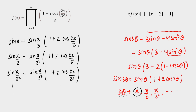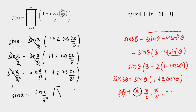If we multiply all these equations from left-hand side and right-hand side, sin(x/3), sin(x/3²) and so on will cancel out telescopically. On the left-hand side, sin(x) remains. On the right-hand side, we have the product of all (1 + 2cos(2x/3^n)) terms, plus sin(x/3^n) remaining at the end. So sin(x) equals sin(x/3^n) multiplied by the product from n=1 to n of (1 + 2cos(2x/3^n)).